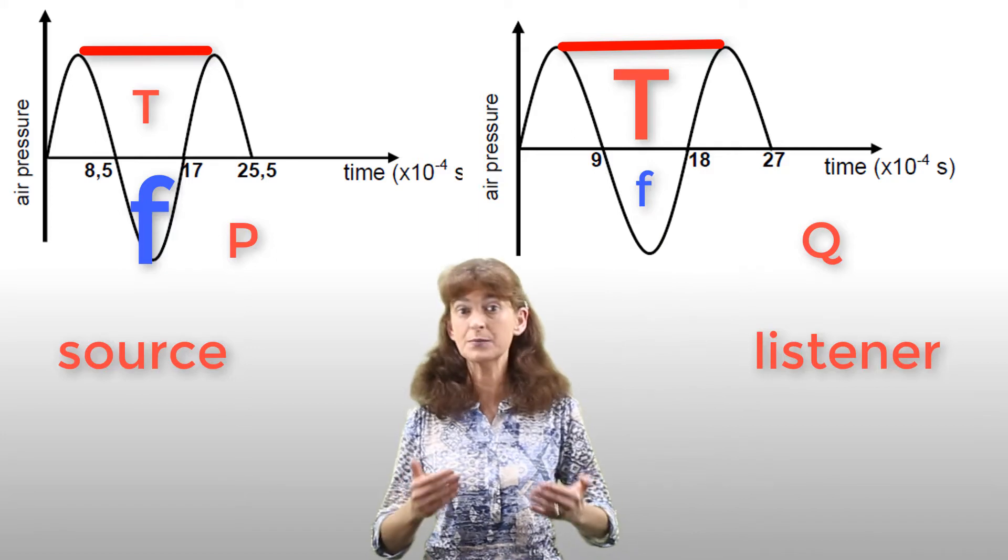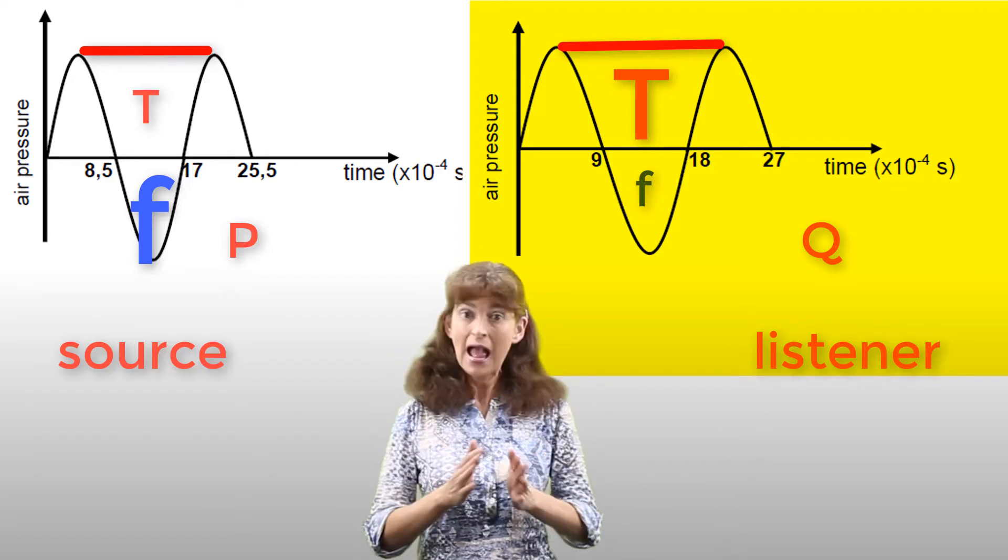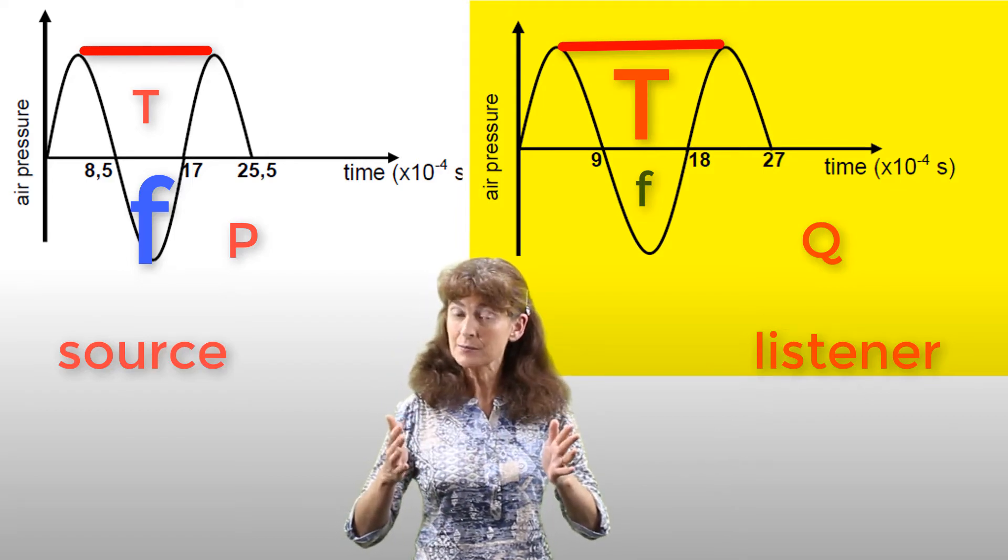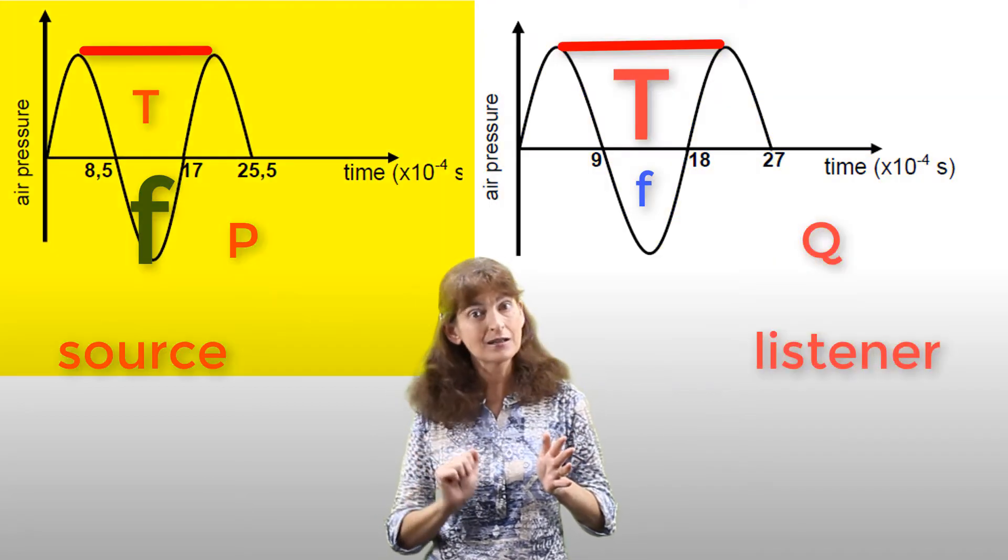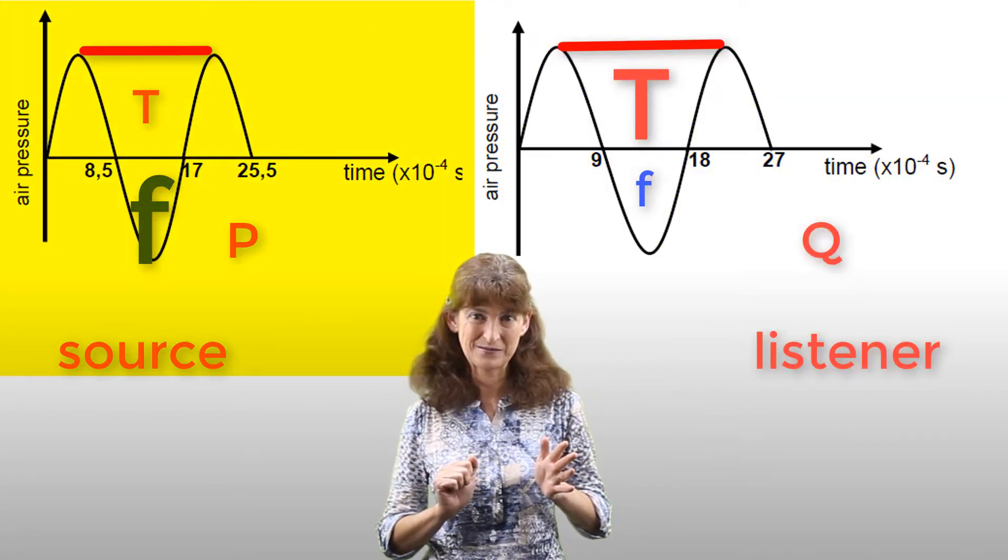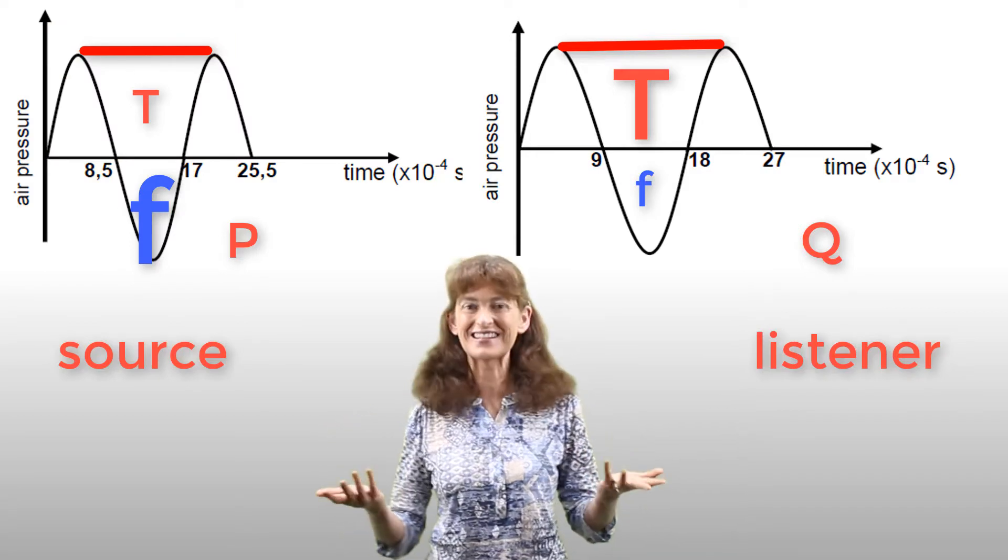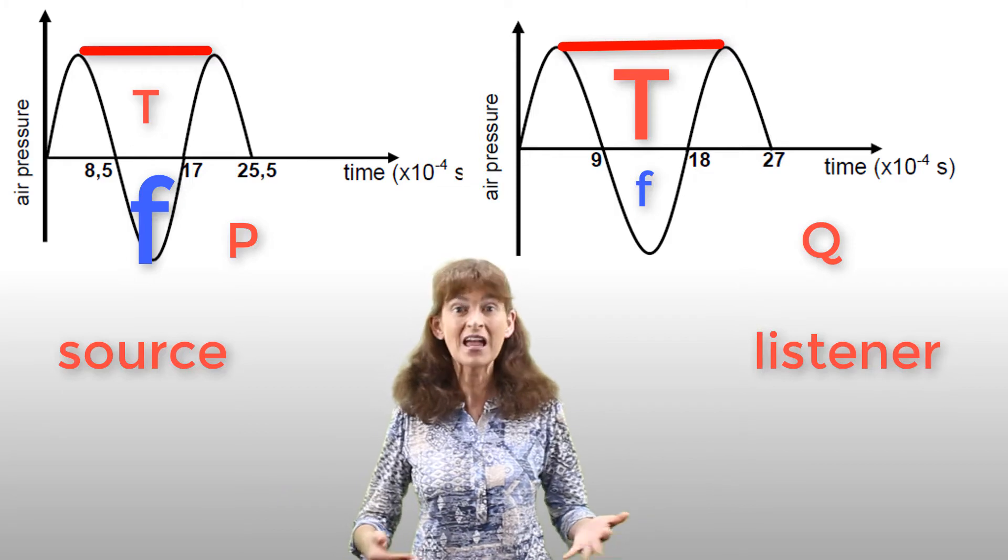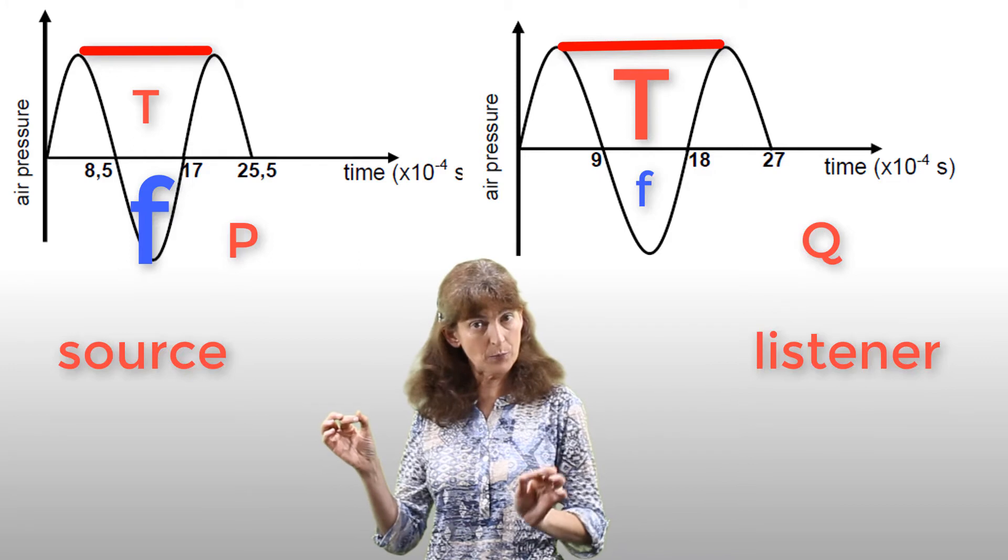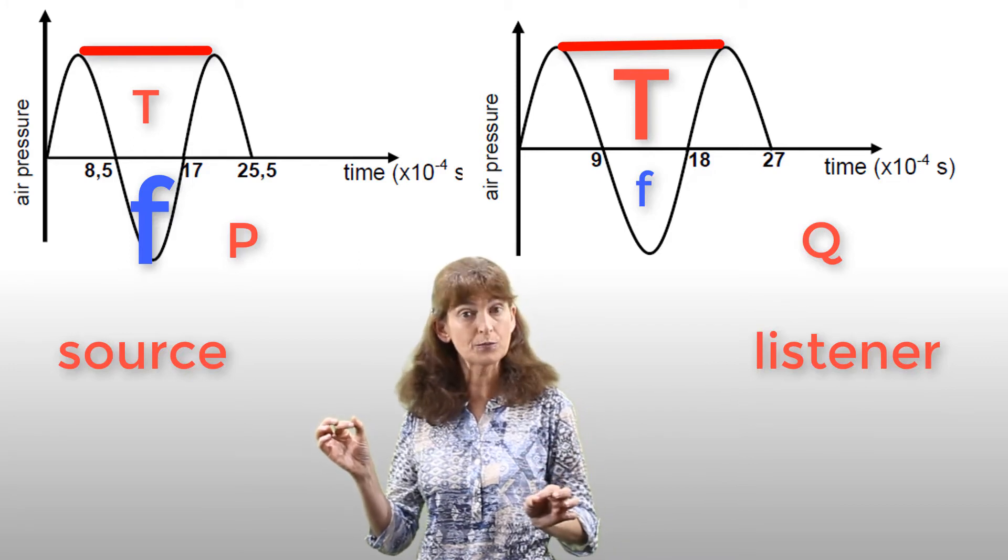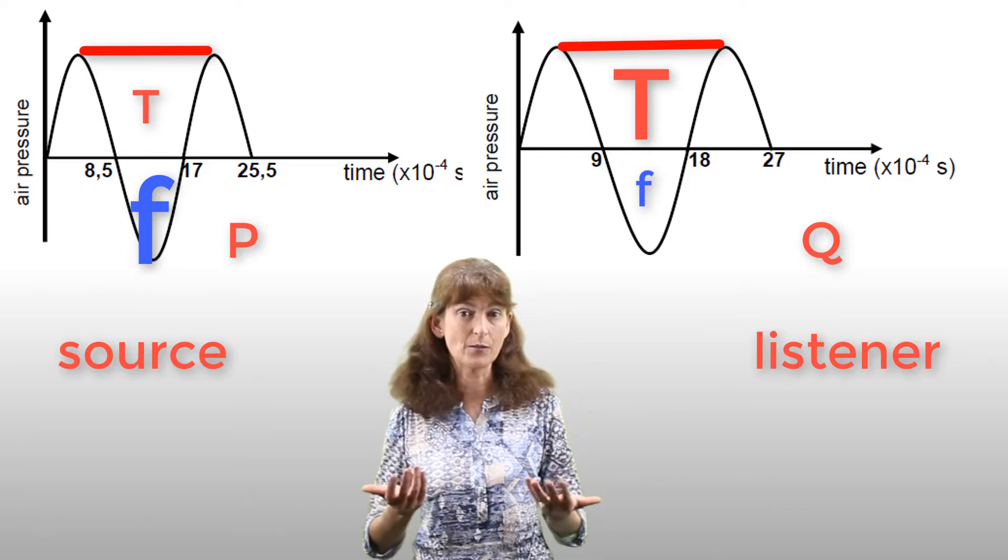In this particular case, we can see that Q, the listener, has a longer period, meaning a lower frequency, a deeper sound, than P, the source. So they must be moving apart. We're getting the stretching effect. And indeed, we're told in the question that the police car P is moving away from the stationary point on the side of the road, Q.